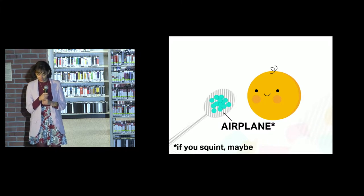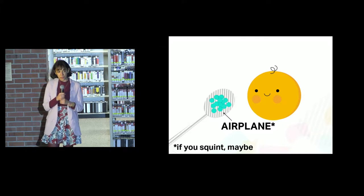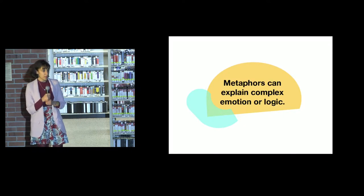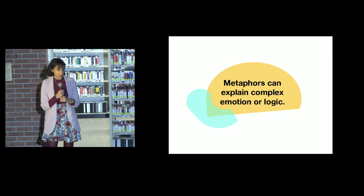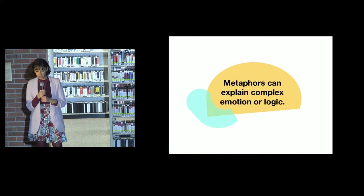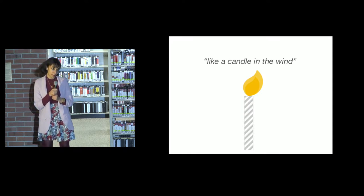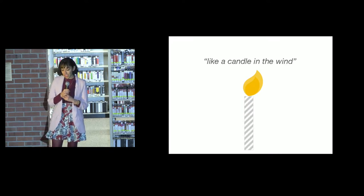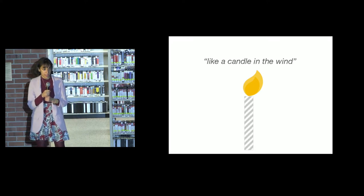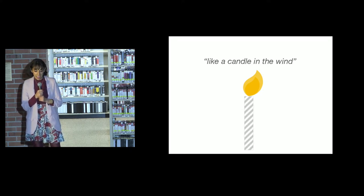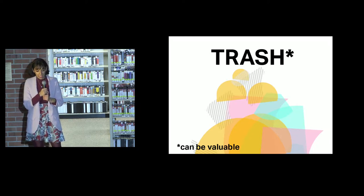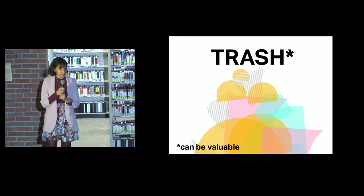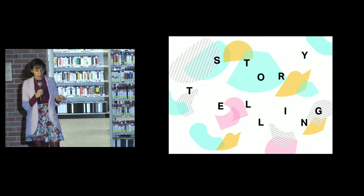And just as this spoon is a metaphor for an airplane, metaphors can be used to explain complex emotion or logic very simply where paragraphs and paragraphs of text could fall short. So I could talk about what it feels like to feel weak or frail or knocked down — or I could just say something like, it feels like a candle in the wind. And suddenly you just get it. And this principle also applies to product design. People were having a hard time figuring out how to get files back after removing them, and Apple came out with the trash can icon. And suddenly people just got it because it mapped to something they were familiar with. Apple actually ended up patenting this, and they made millions off of technically trash.